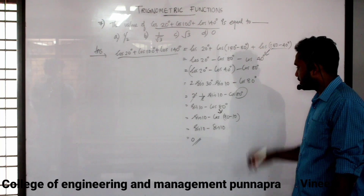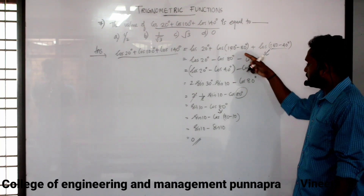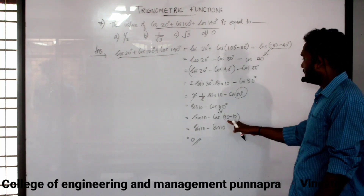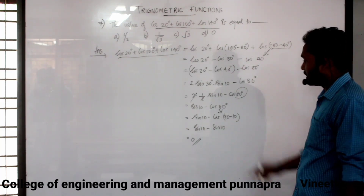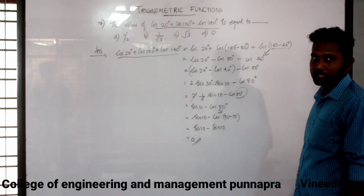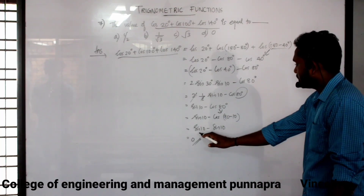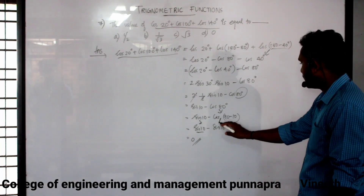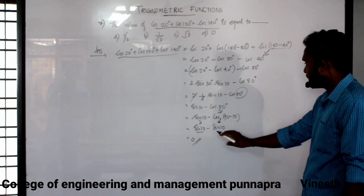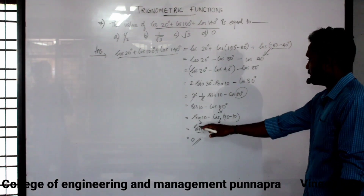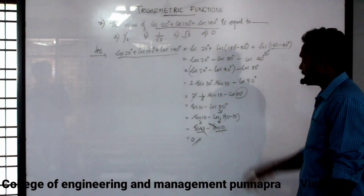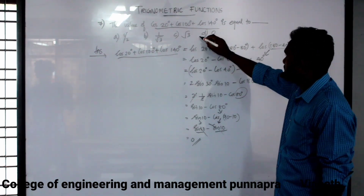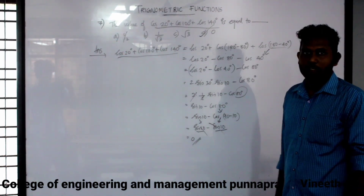It is like cos(90 minus 10), which gives sin 10. That is sign 10 — sign and delirium. So the answer is 0. Option D is the answer.